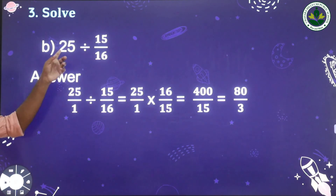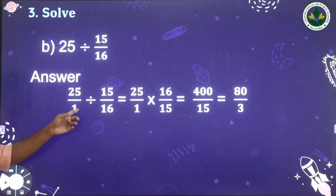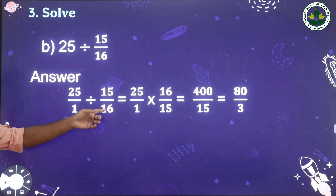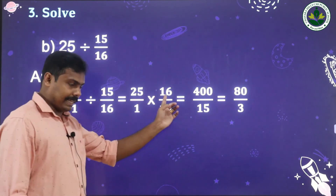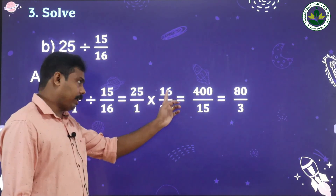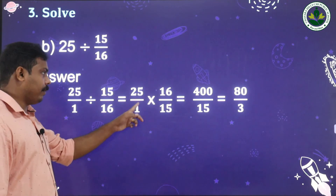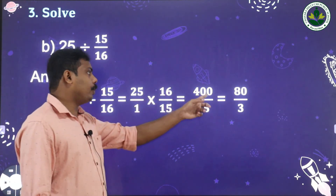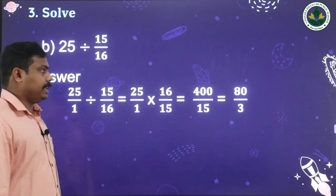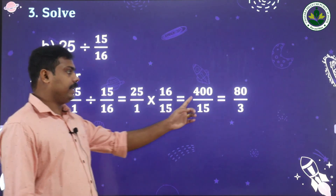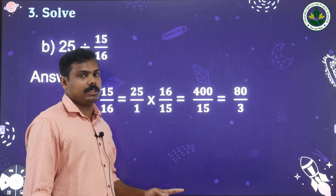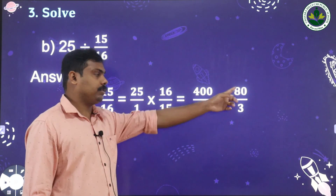To summarize this solution: first convert the whole number as a fraction — 25/1 divided by 15/16. Take the reciprocal of the second number and multiply: 25/1 into 16/15. That gives 25 into 16 equals 400, and 15 into 1 equals 15. We cancel these two numbers with 5: 5 into 8 is 40.